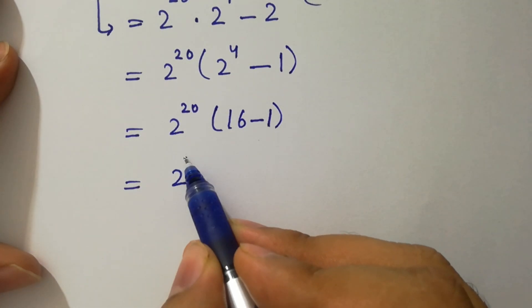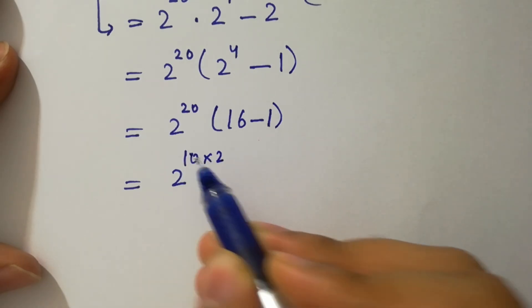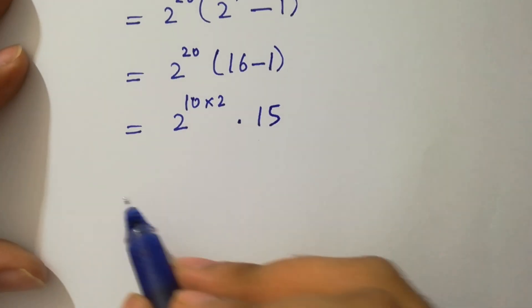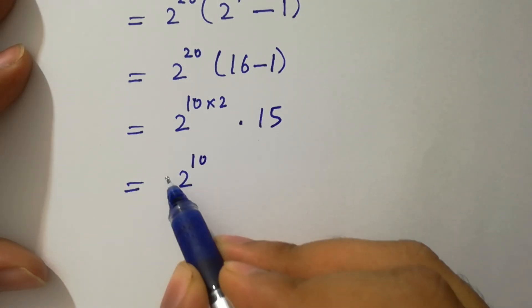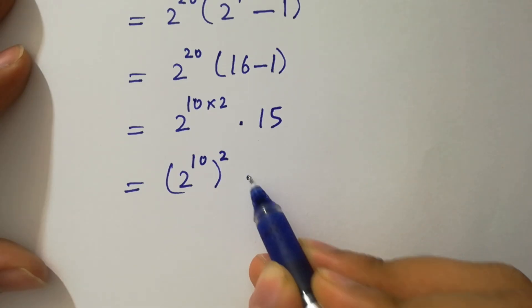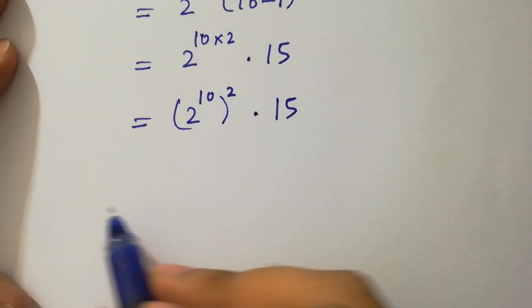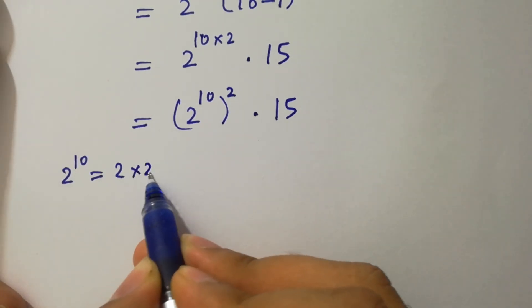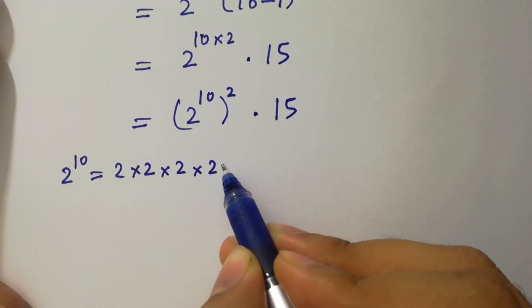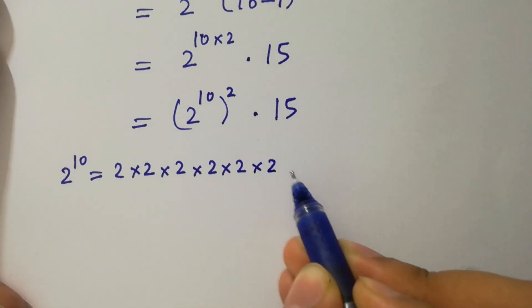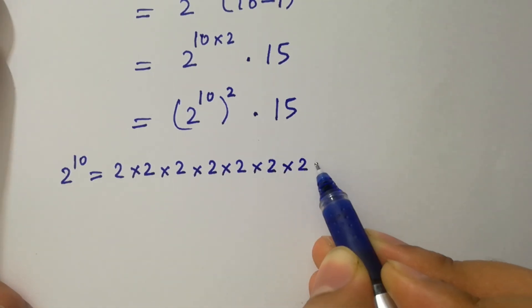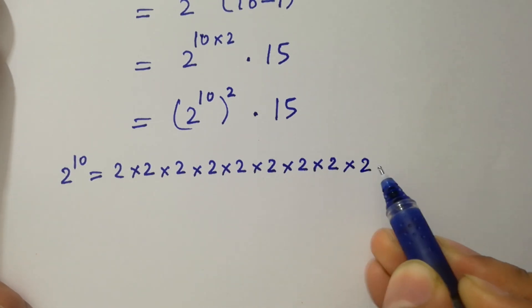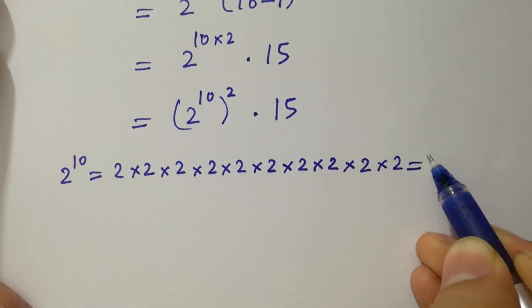We have 2 to the power 20, same as (2 to the power 10) squared, times 15, since 2 to the power 4 is 16 minus 1 is 15. Now 2 to the power 10: 2, 4, 8, 16, 32, 64, 128, 256, 512, 1024.